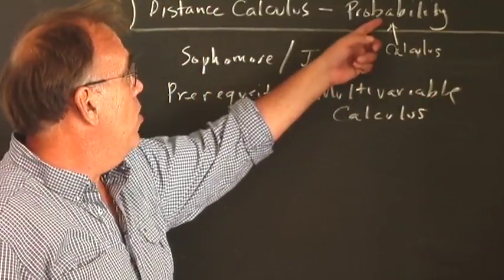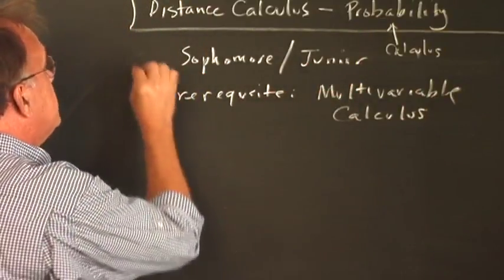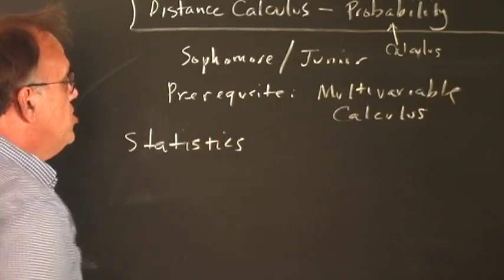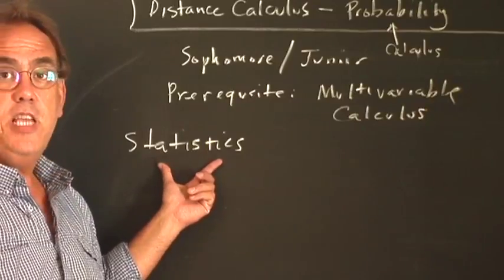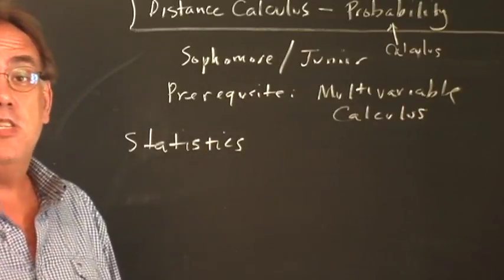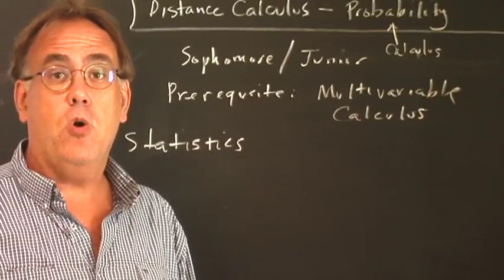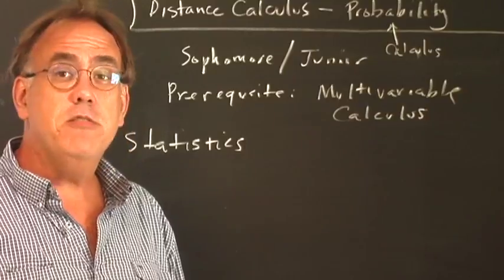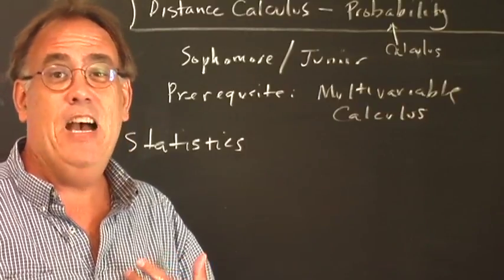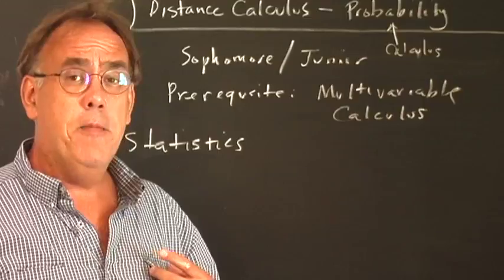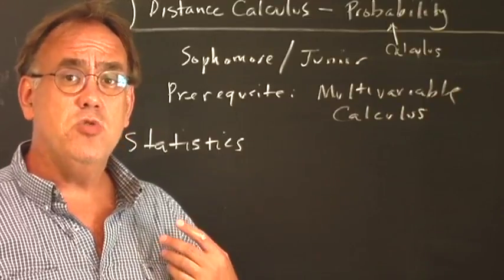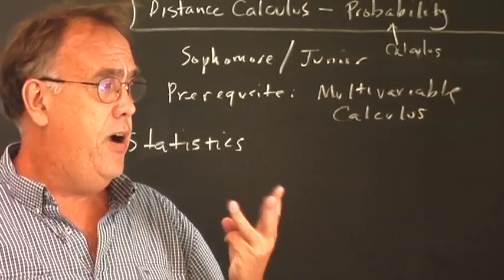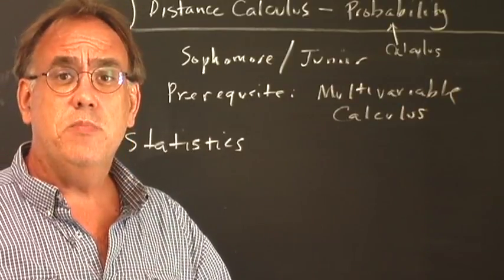The lower course than this is called statistics. This is generally a course that is taken by really anybody. Statistics is a very common course for non-science majors. Math majors generally don't take statistics. In fact, I never took statistics when I was a student. So it's a course that's usually taken by nursing students, psychology students, humanities students sometimes take statistics.